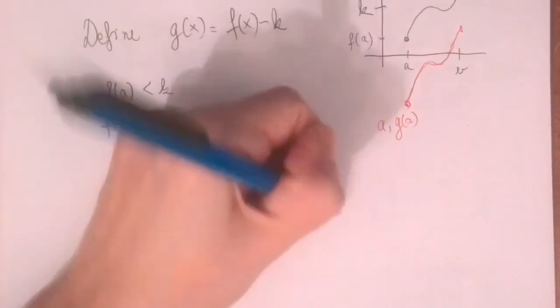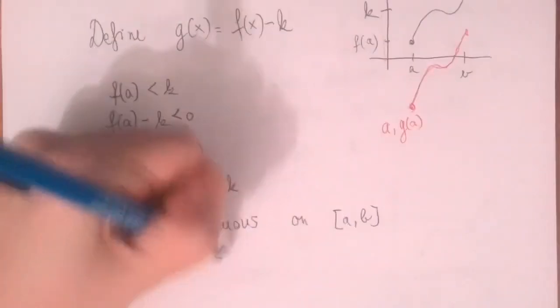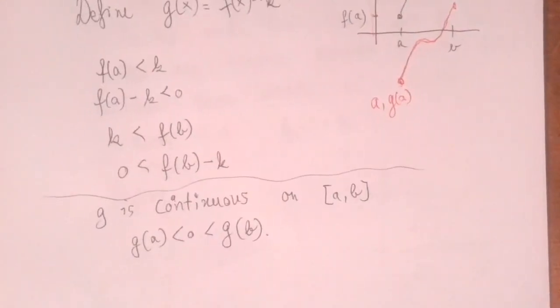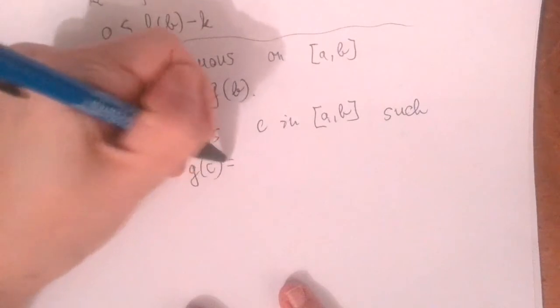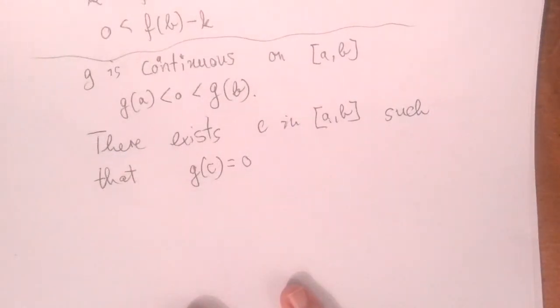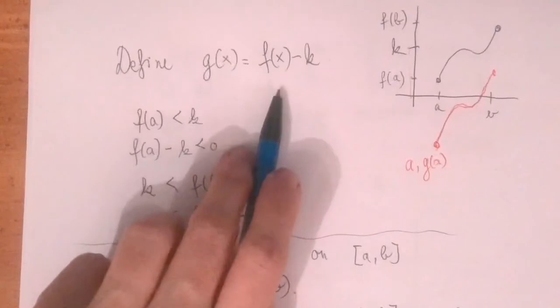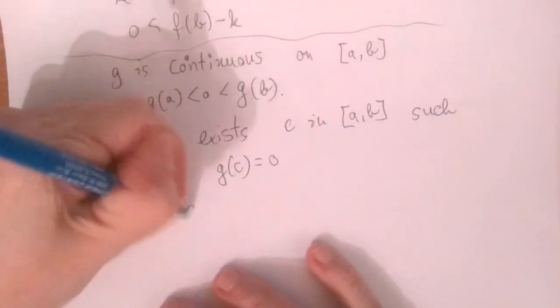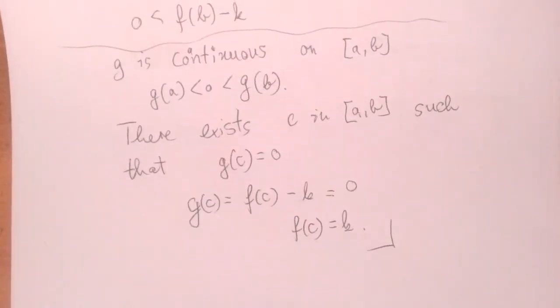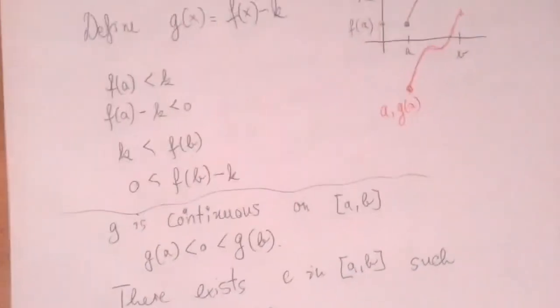If we subtract a constant from a continuous function, the difference is continuous, so g is continuous on a, b. g of a is negative and g of b is positive. By the result we just proved, there exists c in the interval a, b such that g of c is zero. But g of x is f of x minus k, so g of c equals f of c minus k. If that's zero, then f of c equals k. This completes our proof.